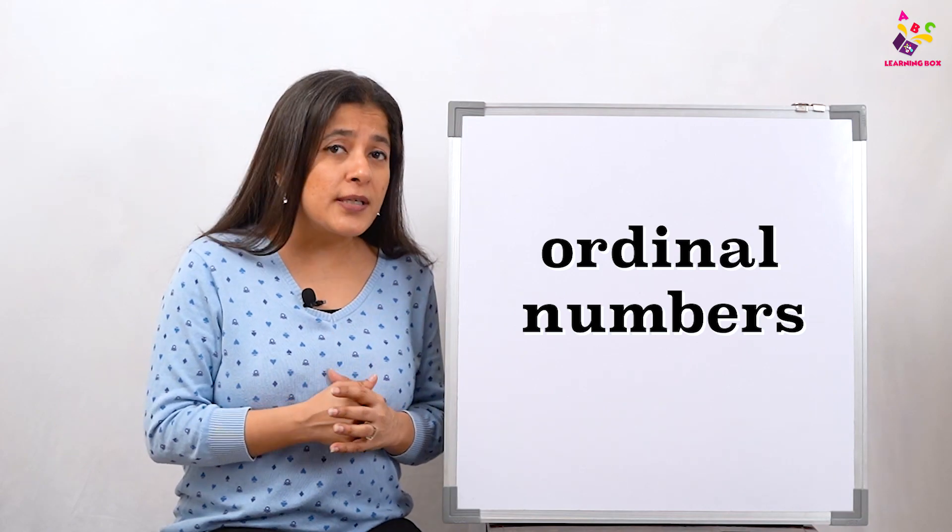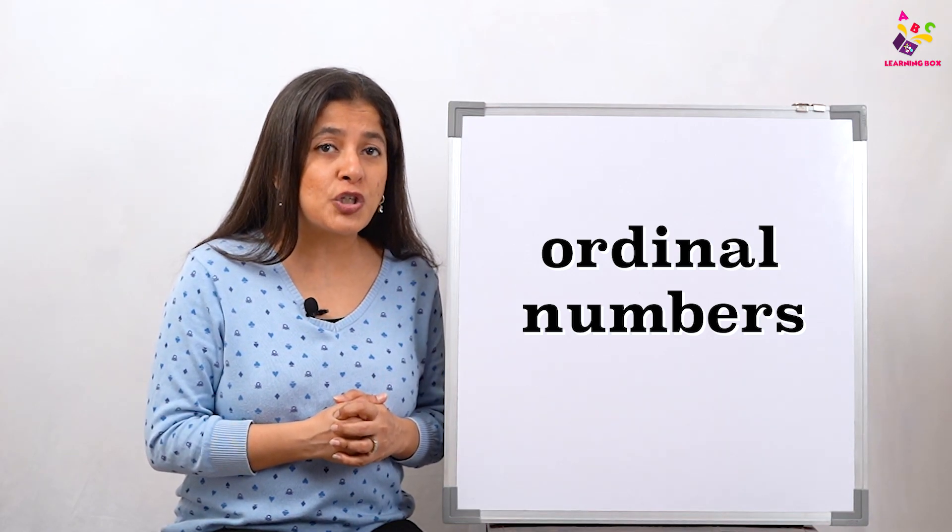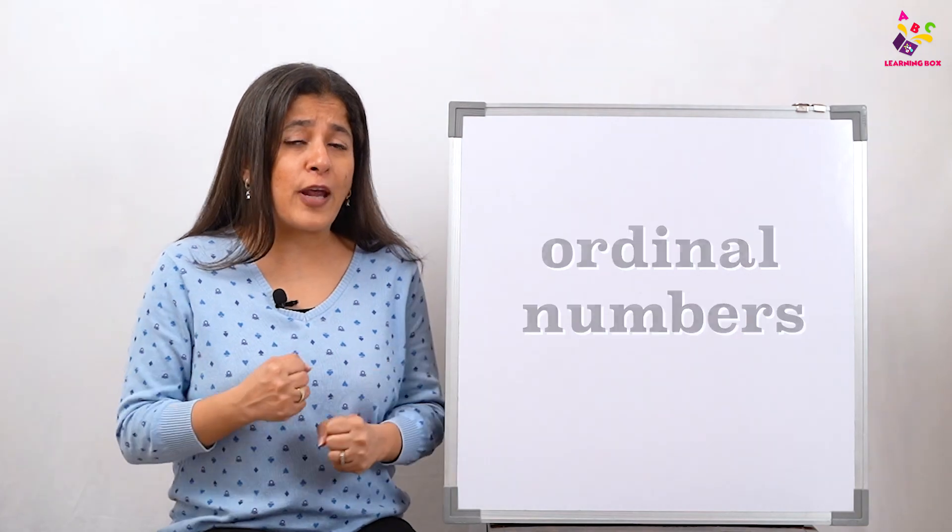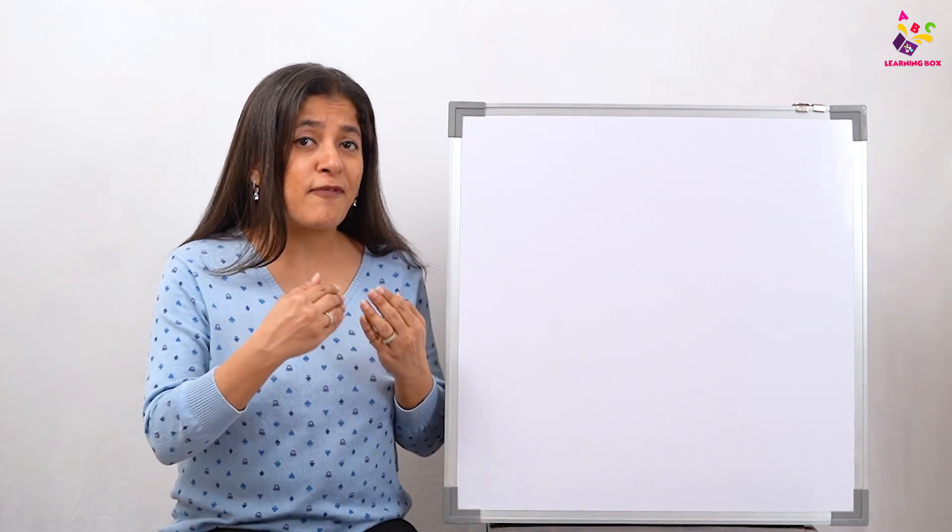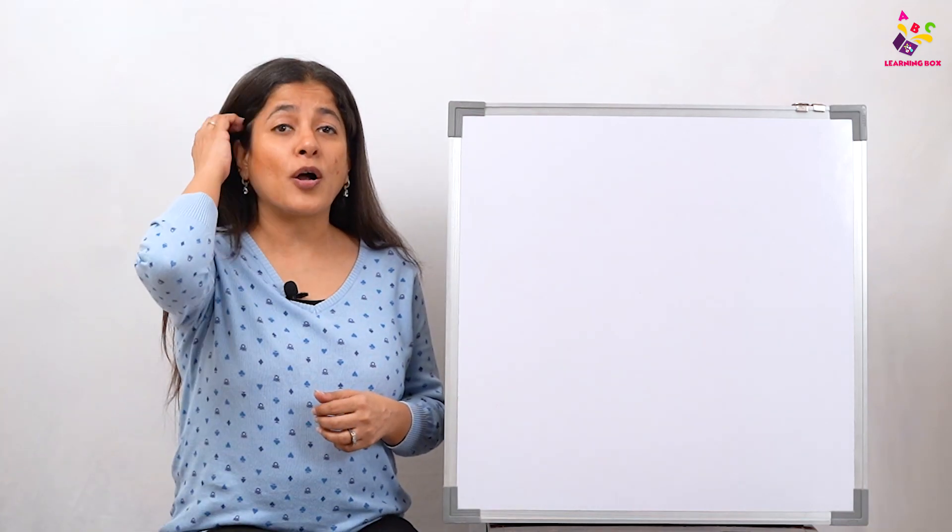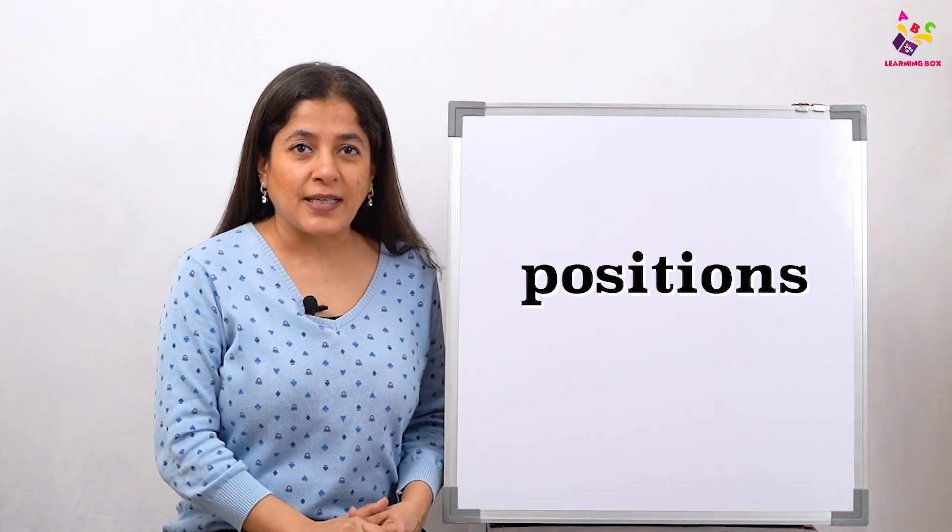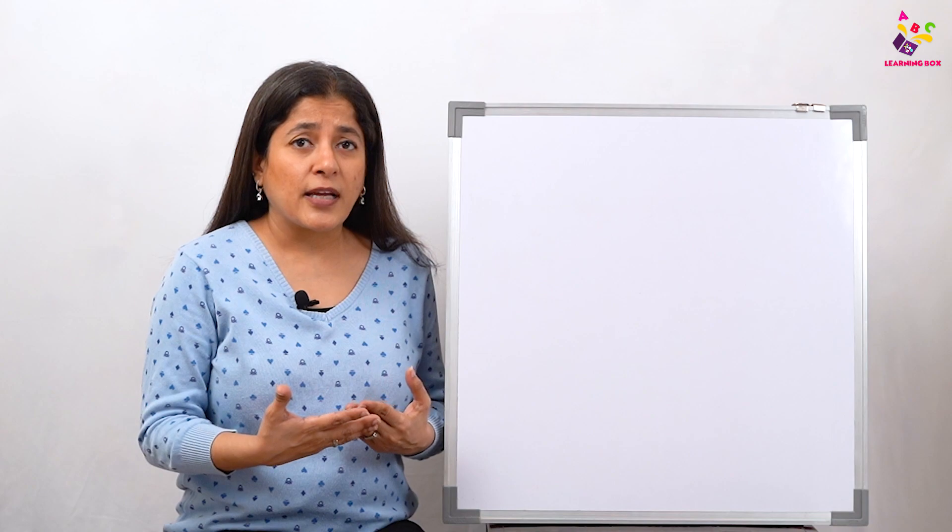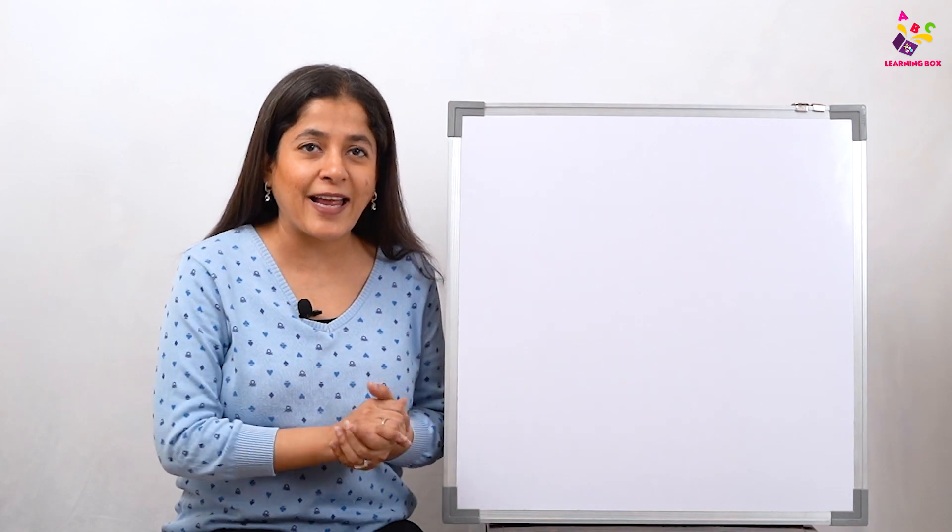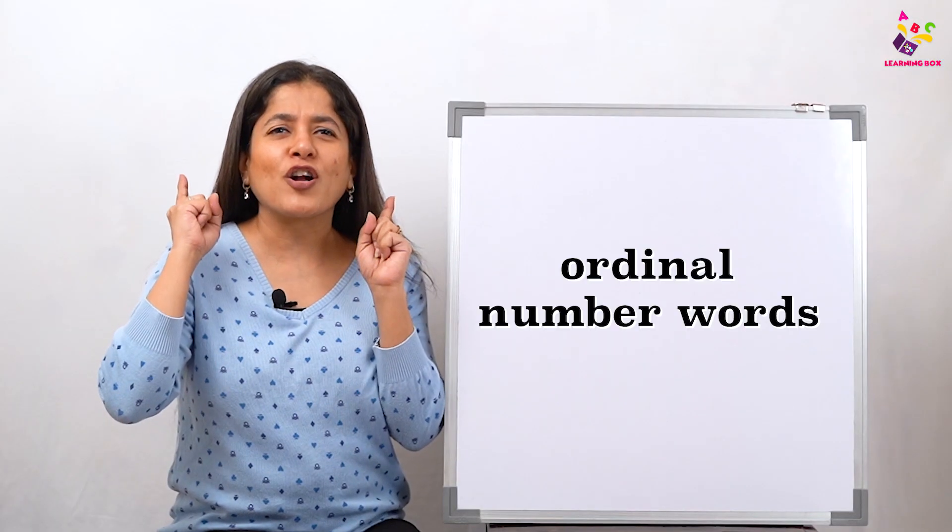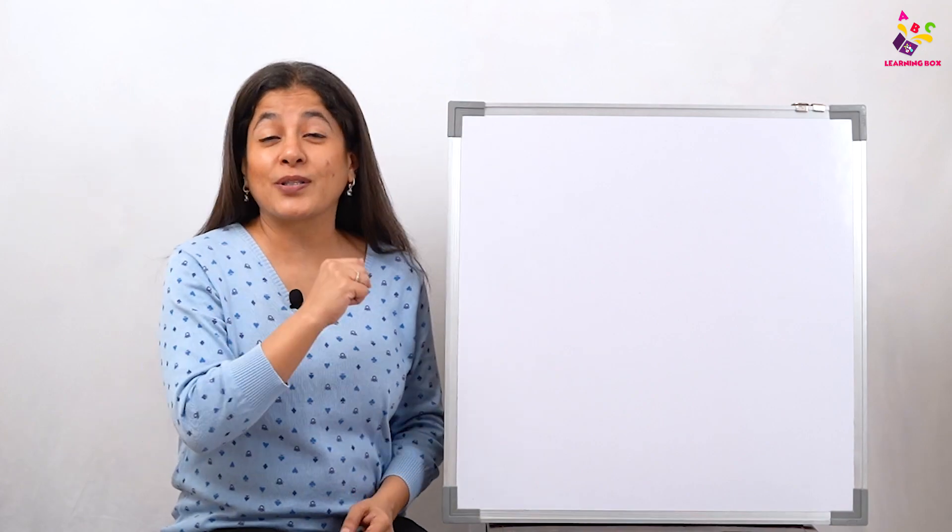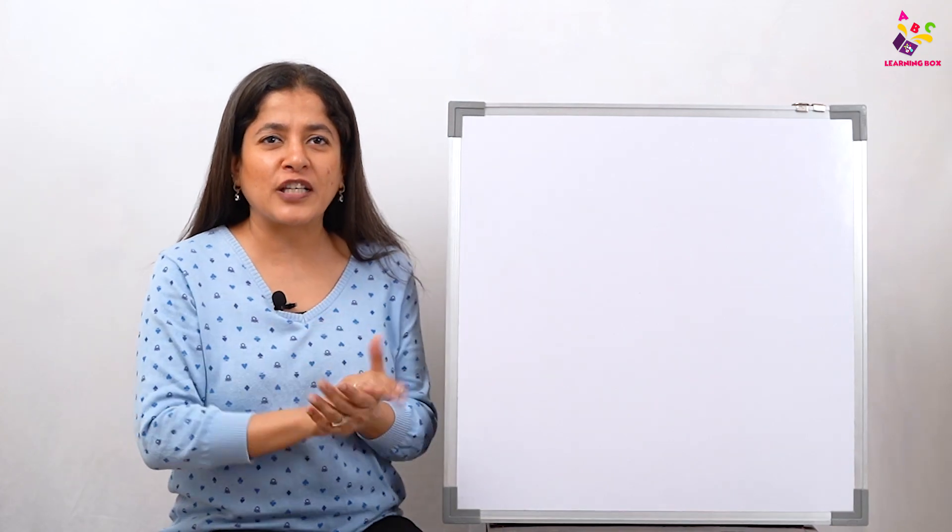Ordinal numbers are numbers which show the position of some objects. For example, when we run for a race, someone comes first, someone comes second, someone comes third. Even when we see a car race, which car came first, which one came second, which one came third. Today we are going to learn our ordinal number words, the spellings of your ordinal numbers.